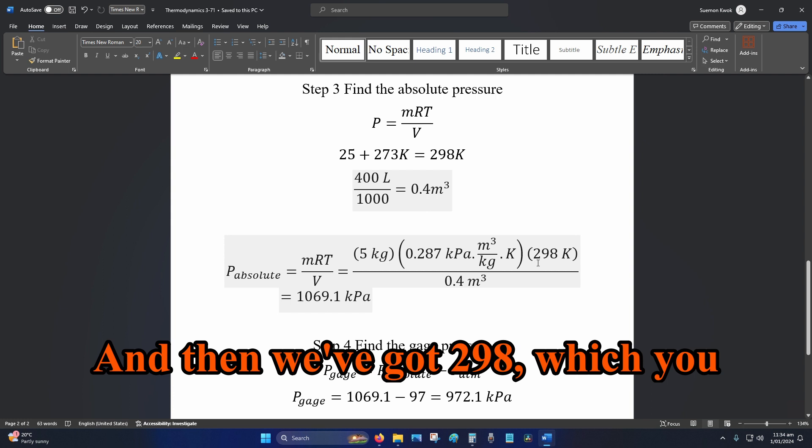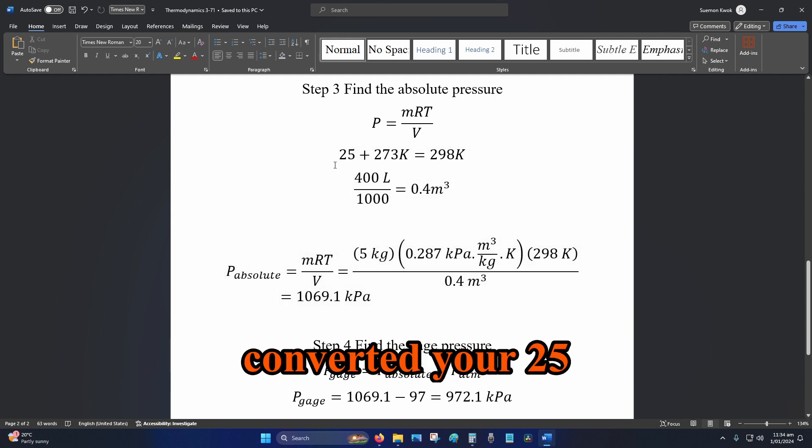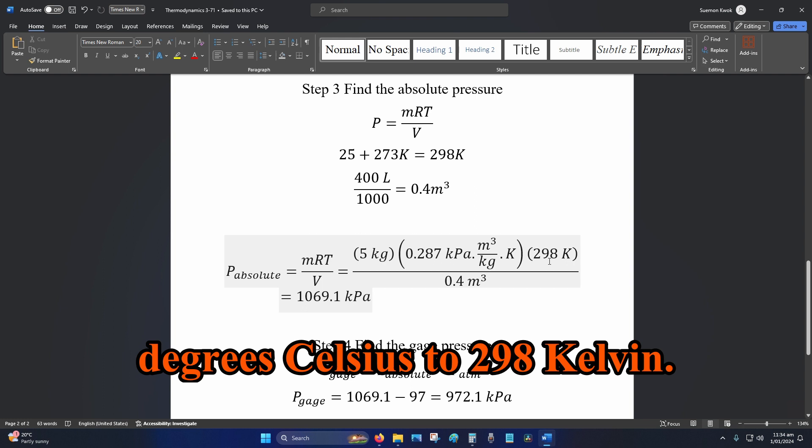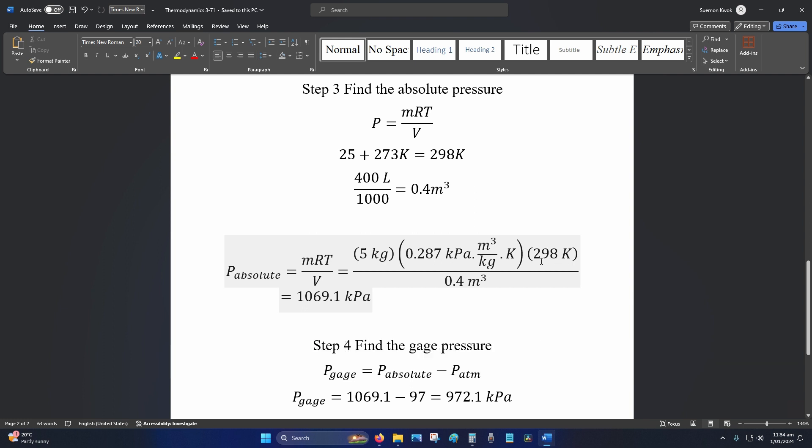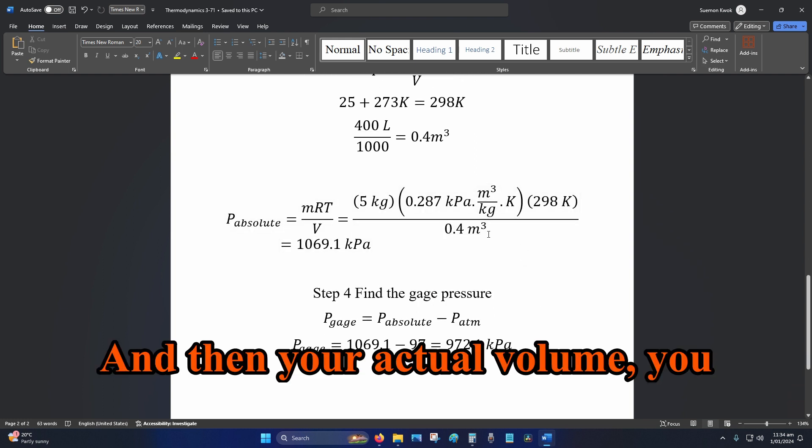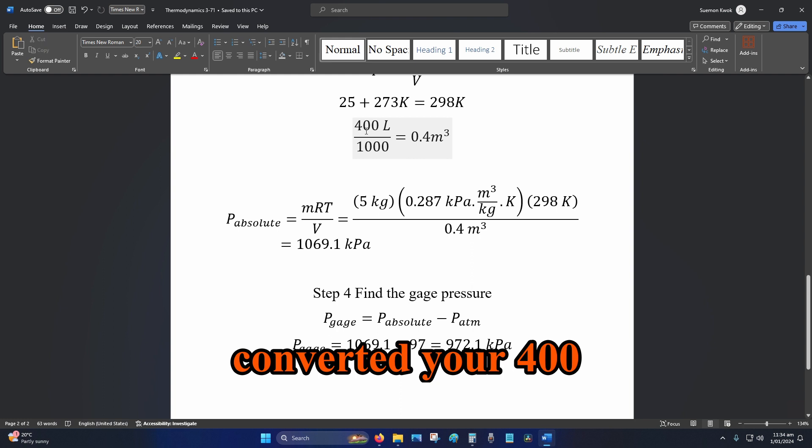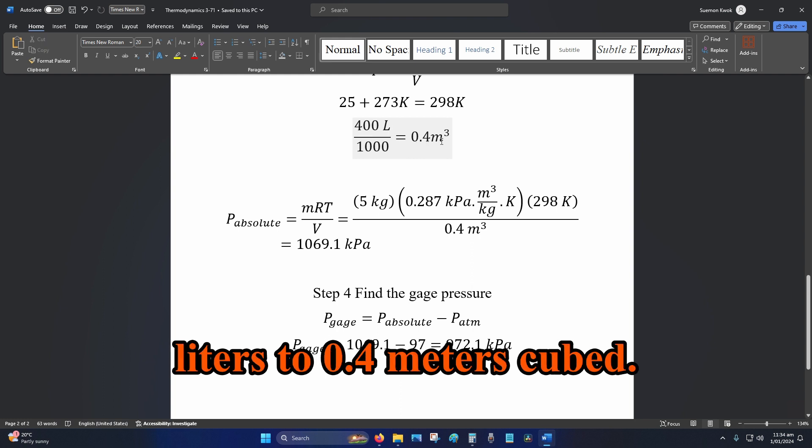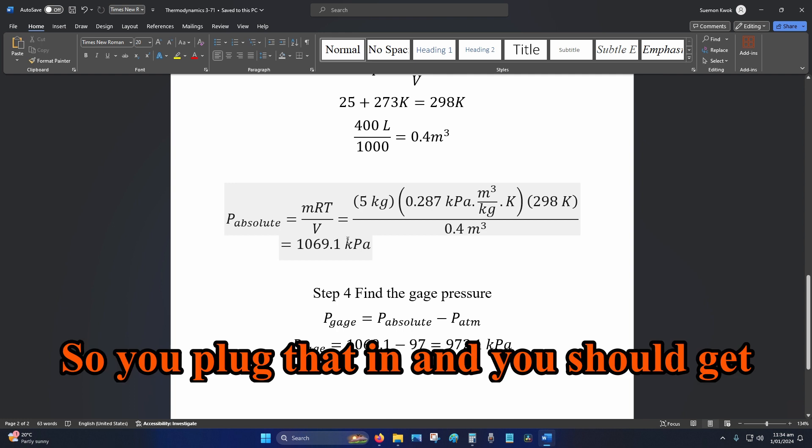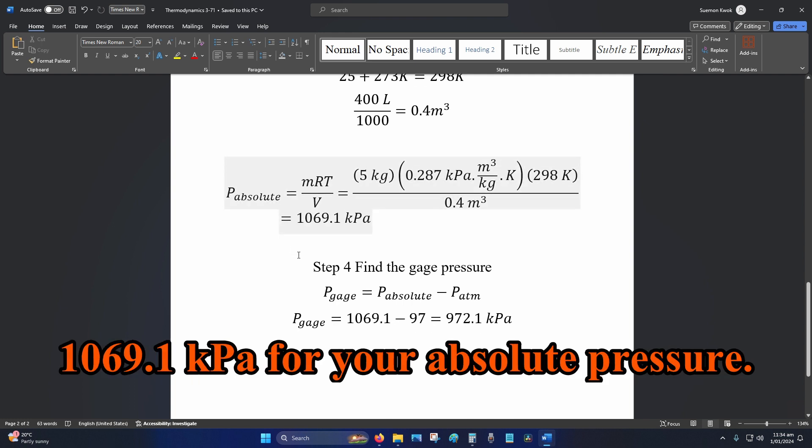And then we've got 298 which you converted from 25 degrees Celsius to 298 kelvin. And then your actual volume, you converted 400 liters to 0.4 meters cubed. So you plug that in and you should get 1069.1 kPa for your absolute pressure.